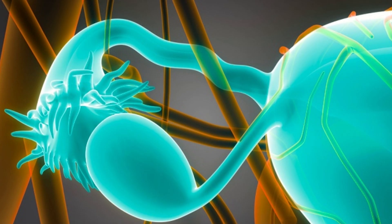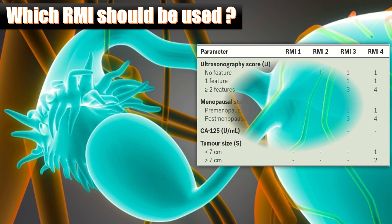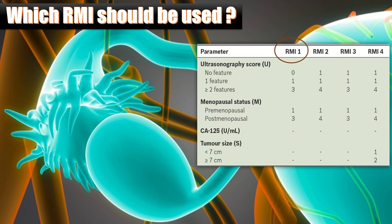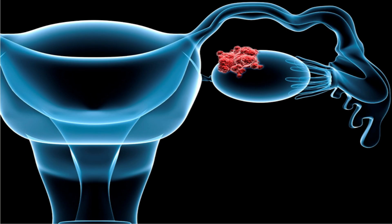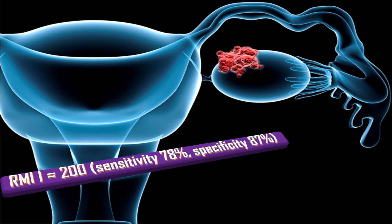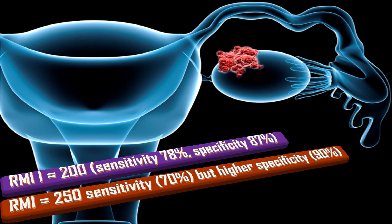The RMI1 is the most utilized, widely available, and validated effective triaging system for women with suspected ovarian cancer. An RMI1 score with a threshold of 200 has a sensitivity of 78% and specificity of 87%, and is recommended to predict the likelihood of ovarian cancer and plan further management. Some centers utilize an equally acceptable threshold of 250, with a lower sensitivity of 70% but higher specificity of 90%.